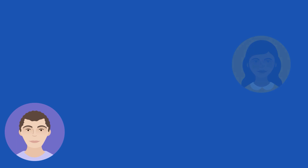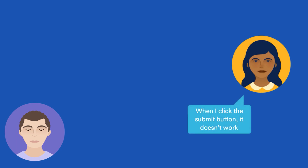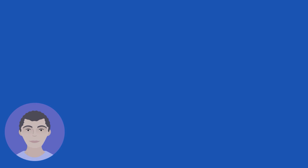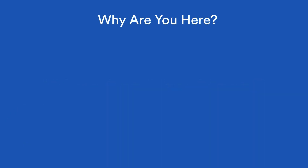Today I got a call from a customer with a particular issue. I know that my co-worker had a similar issue last week — or was it two weeks ago? How can I find the issue when all I really know is that it came up a week or two ago? Welcome to searching with dates.